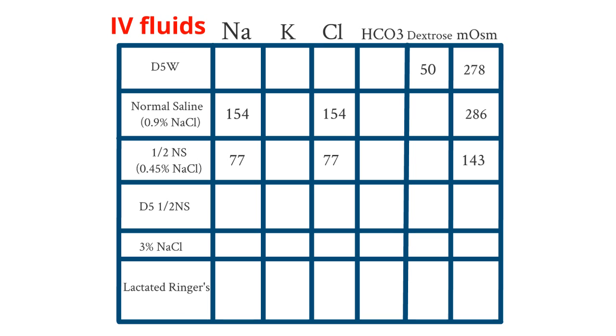Now half normal saline, as you expect, is half of that of normal saline. So sodium 77, chloride of 77, and milliosmols of 143, making it hypotonic.